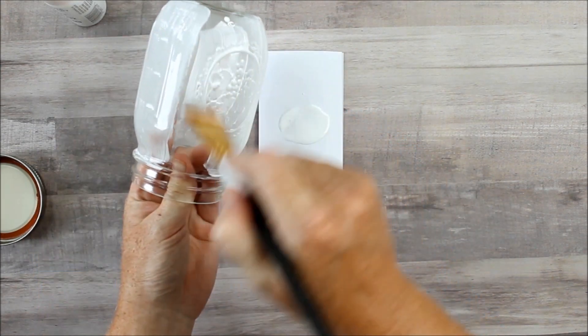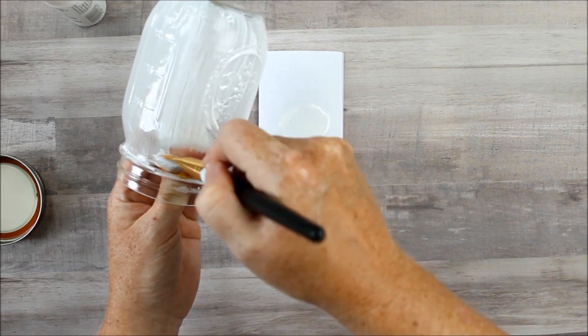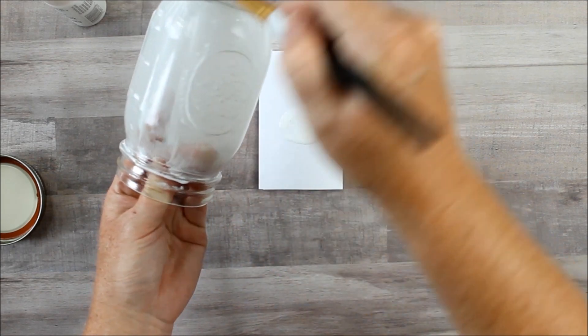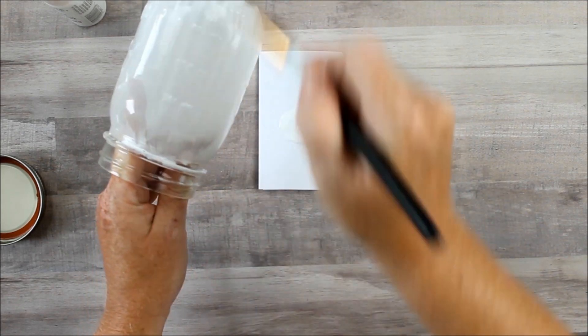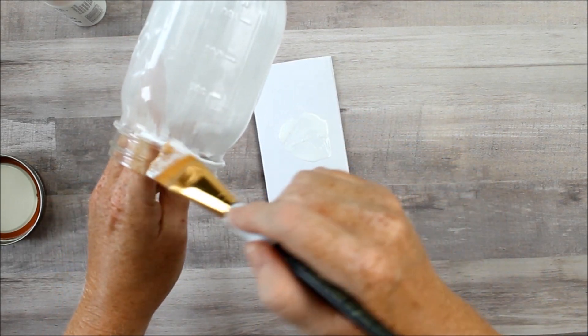One trick is to insert your hand into the top of the mason jar when painting so that you can paint the entire mason jar at one time. And then just allow to dry upside down.